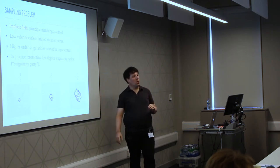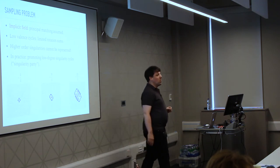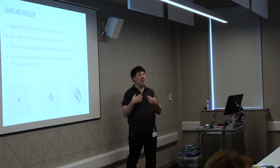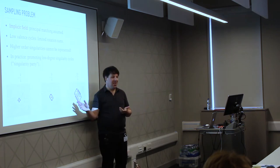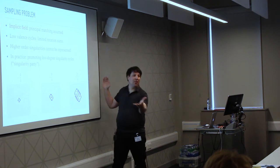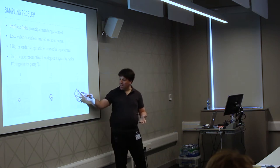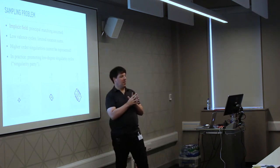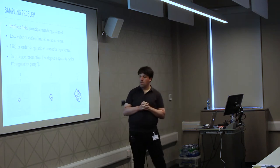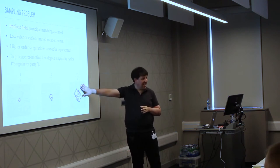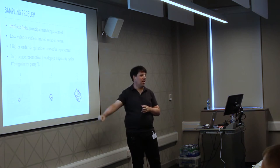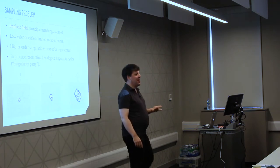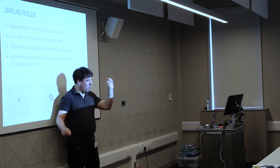If you look at a field where the triangulation is much coarser than the information you need, it will create what we call a singularity party. The sum of indices is still correct globally, but locally you'll see these nasty patterns, and it really depends on the triangulation. For a lot of algorithms like meshing, when you have many singularities bunched up together against triangles, it's going to be a problem — algorithms will fail.